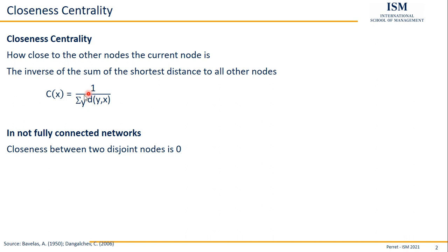Summing up infinity with anything else always gives infinity. So we have one divided by infinity, which from a limit perspective would go towards zero. So this makes sense to say if this node is disjoined from the network, is not part of the current network, then the closeness is zero.